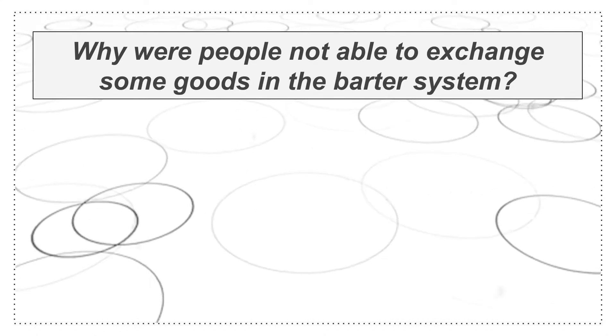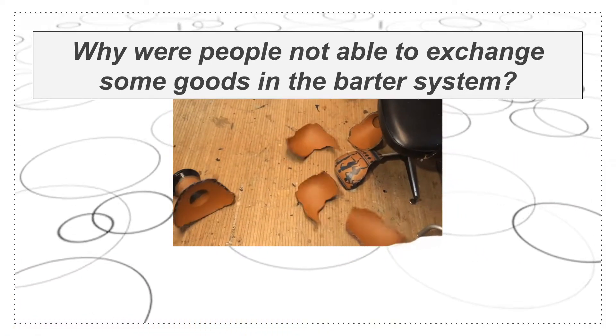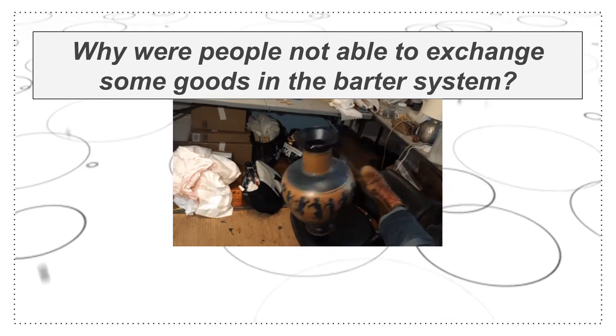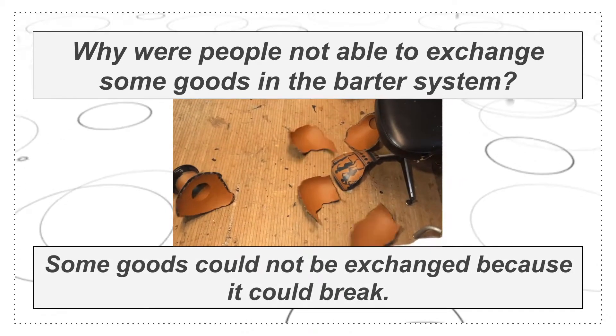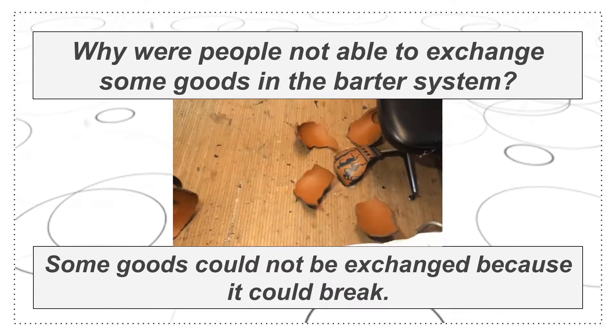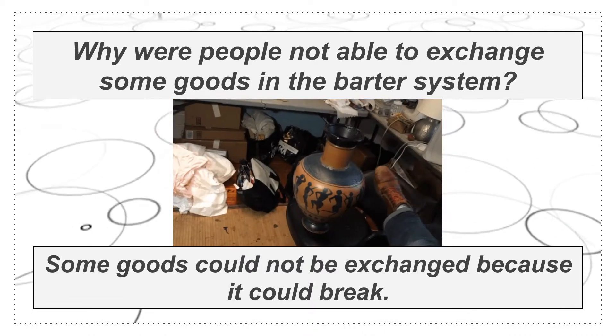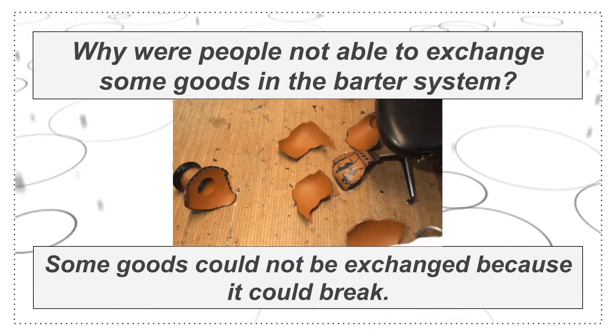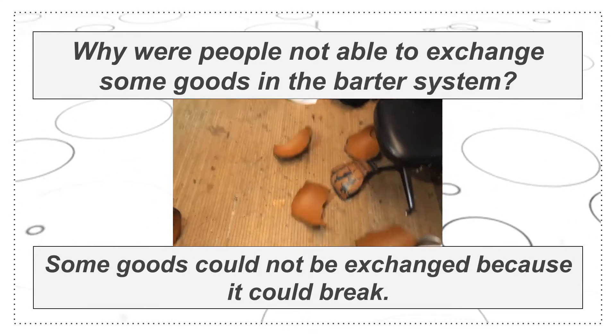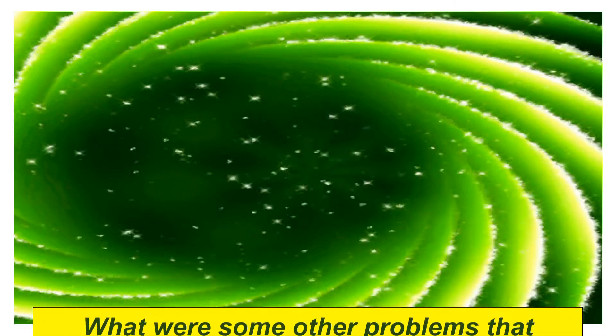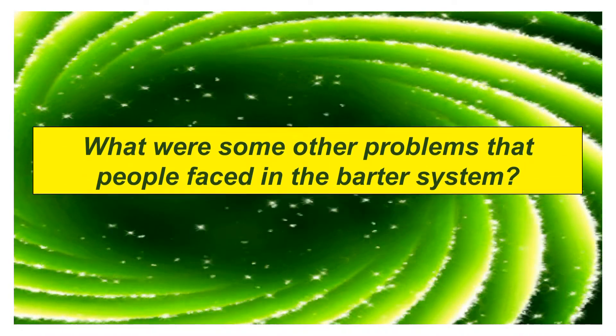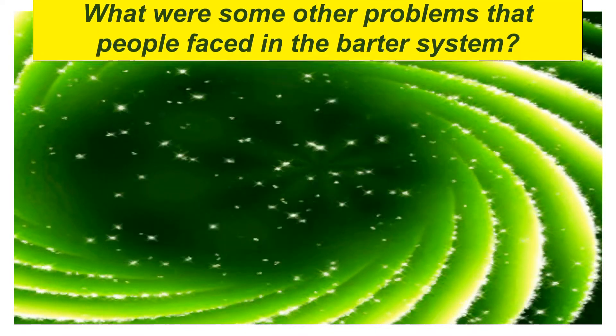In ancient times there were things like pottery that were difficult to move as they could break. Although people wanted to exchange pottery, they could not, as pots were difficult to carry back home. You can see on the screen how a pot breaks. So what were some other problems that people faced in the barter system?